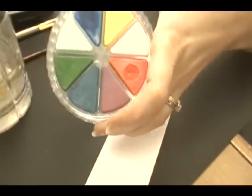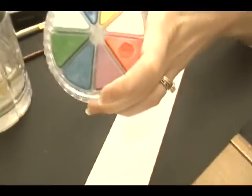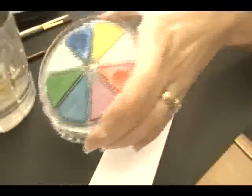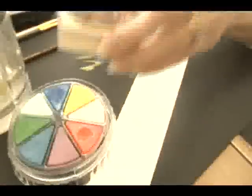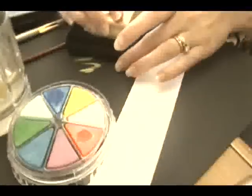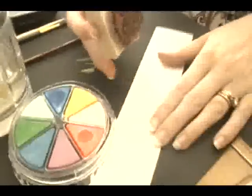The first thing we're going to do is select the chalks that we want to use. These are by EK Success, but a whole bunch of different companies make them and they come in multiple really fun colors. And we're going to choose our stamp and our stamp pad. And we're just going to go ahead and stamp our image.